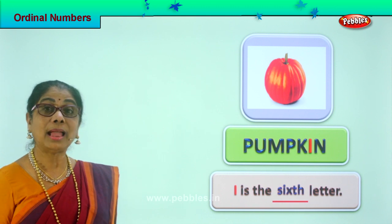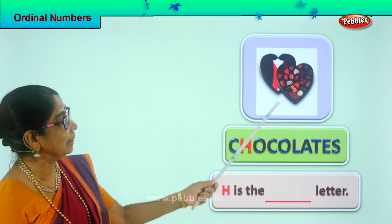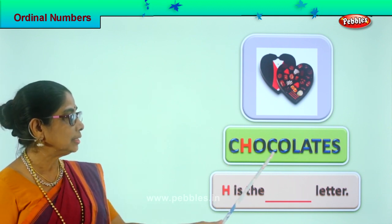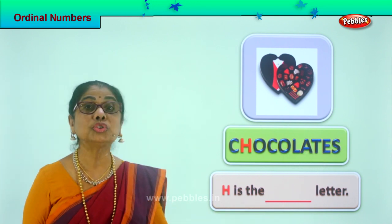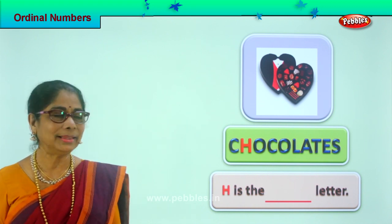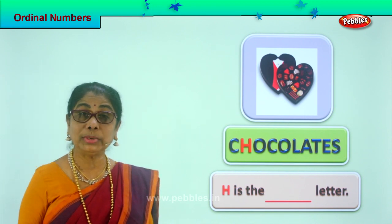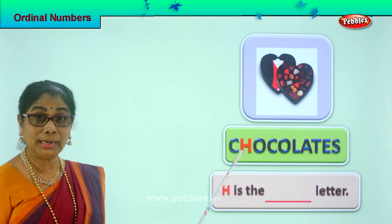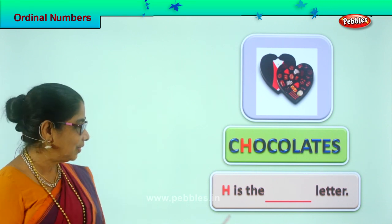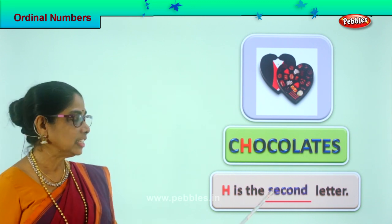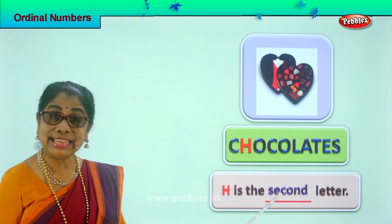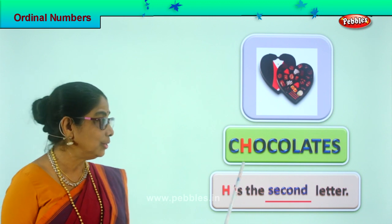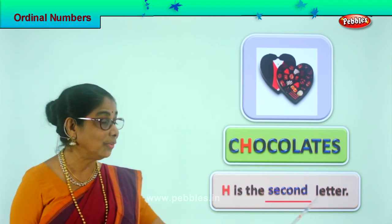Good. Let's look at another picture. What is that? Chocolate! You love to eat chocolate, yes. Let's spell chocolate: C-H-O-C-O-L-A-T-E-S, chocolates. Who brings you chocolate? Your mom, your dad, yes. Now in the word chocolate, which letter is colored? H. What is the position of H? First, second — H is the second letter. Spell second: S-E-C-O-N-D, second. H is the second letter.